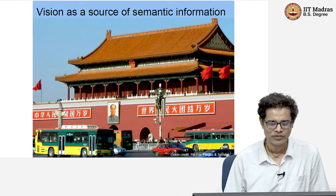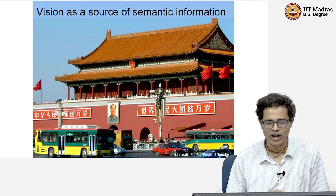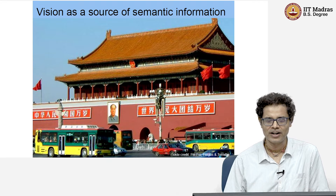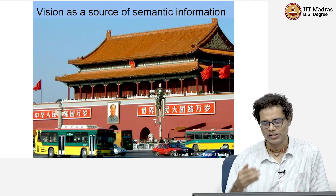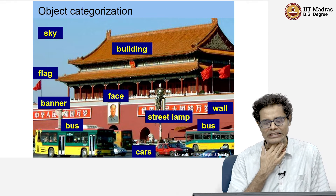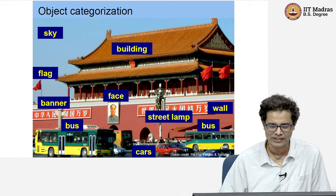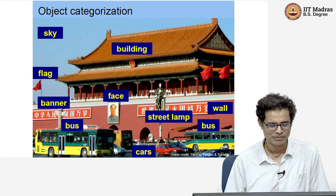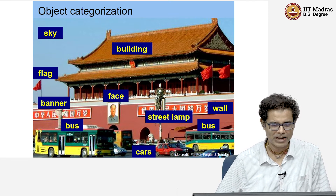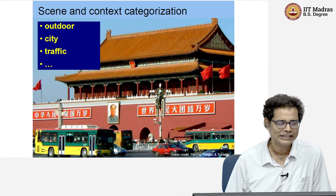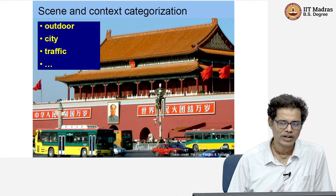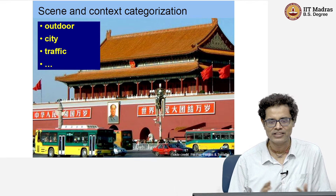As a source of semantic information, when given an image, we are interested in finding out how many objects are there and what kind of objects they are. For example, in a city scene, we can see buses, cars, buildings, and all these things. We are interested in labeling each of these objects — buses, cars, street, banner, flag. This is a semantic task, and we can also look at the overall scene for context, like identifying it as a city scene that is outdoor and has traffic. All of these come under semantic tasks.